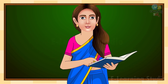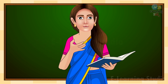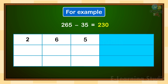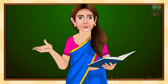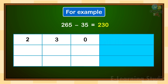Our next property is: adding the subtrahend to the difference will always be equal to the minuend. Let's take an example. We have 265 minus 35, which equals 230. In this question, 265 is the minuend, 35 is the subtrahend, and 230 is the difference. According to this property, when we add the subtrahend with the difference value, we get the minuend: 230 plus 35 equals 265.